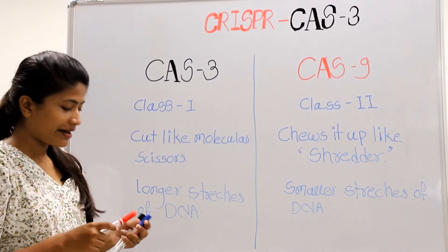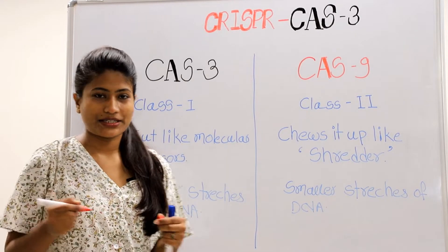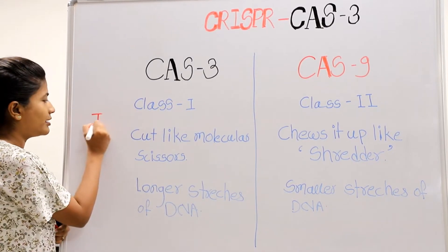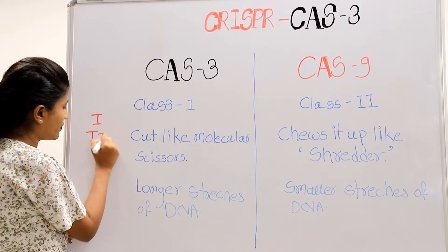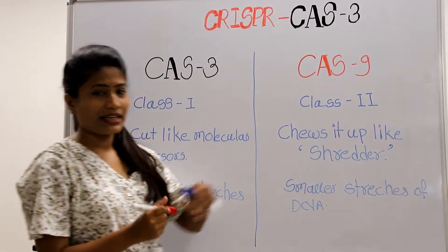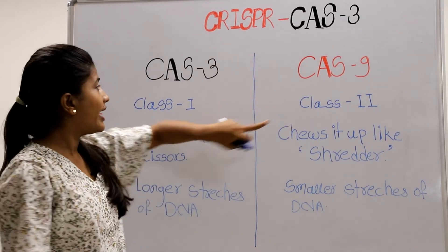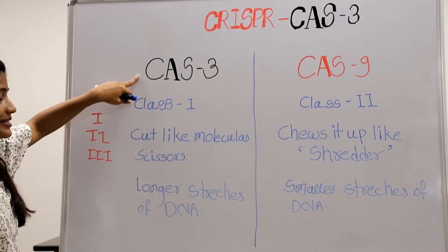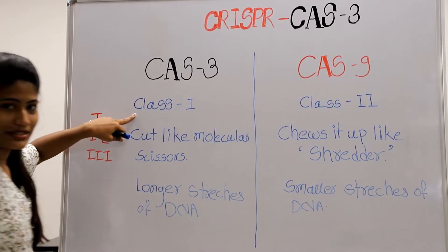Actually, there are three classes of CRISPR system: class 1, class 2, and class 3. The Cas9 belongs to class 2 system and the Cas3 belongs to class 1 system.